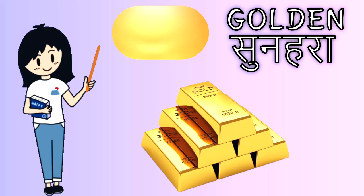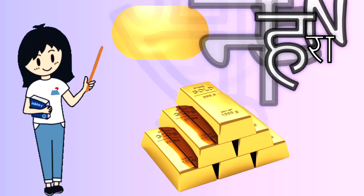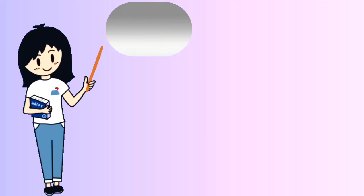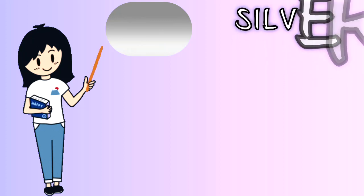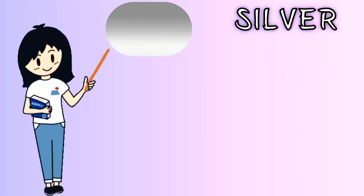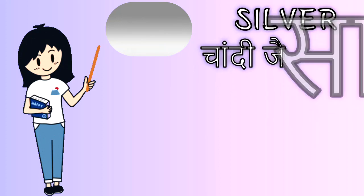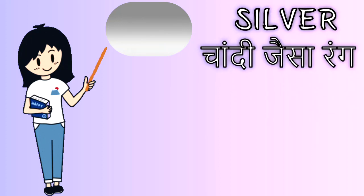Next one is silver. S-I-L-V-E-R. Silver means chandi jaisa rang. Silver like silver.